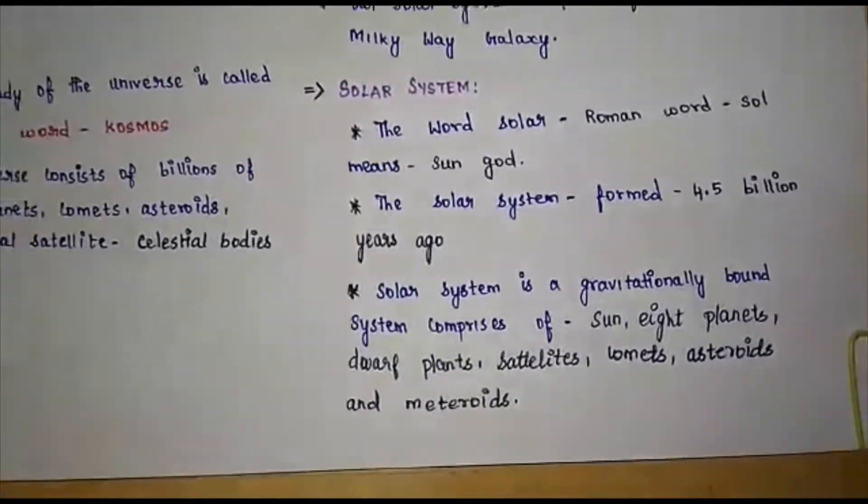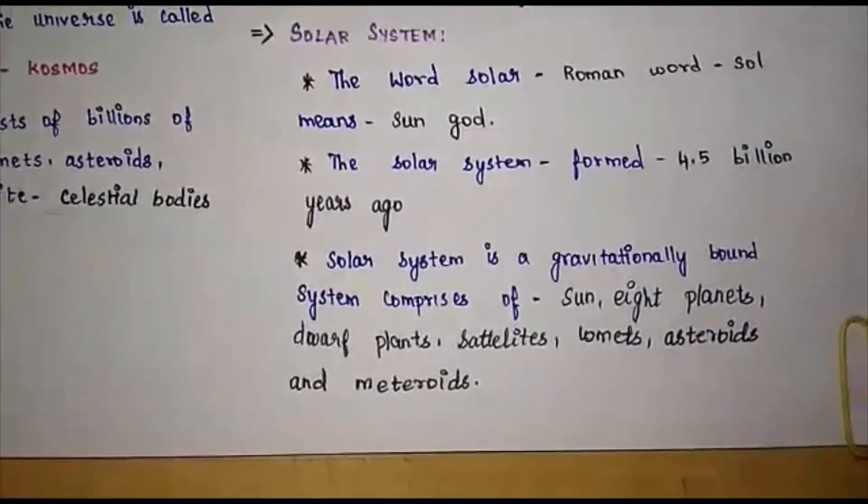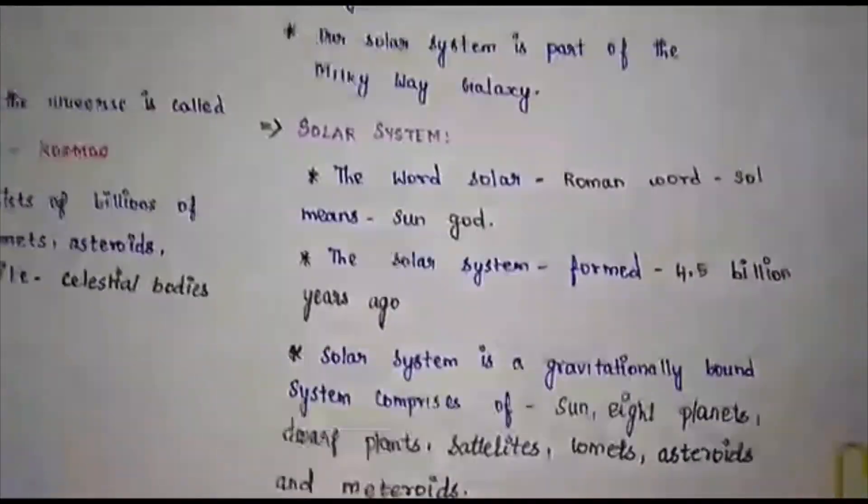What are the eight planets? Mercury, Venus, Earth, Mars, Jupiter, Saturn, Uranus and Neptune. These are the eight planets.